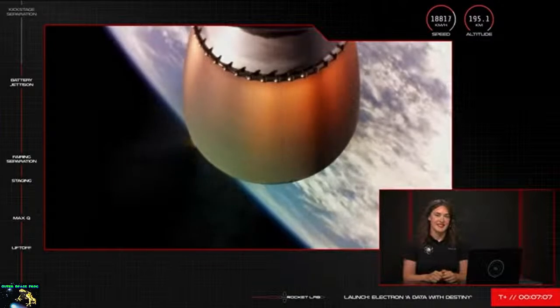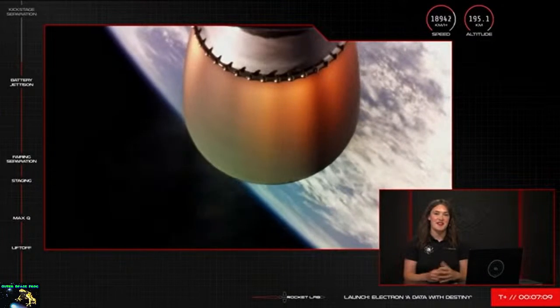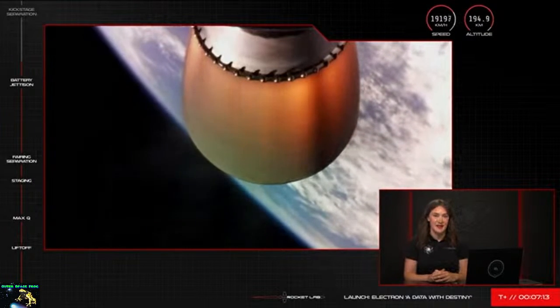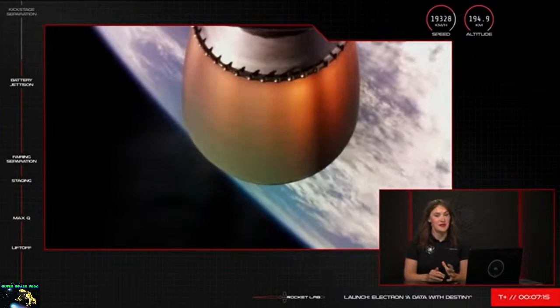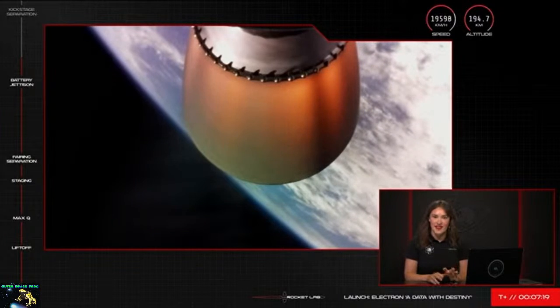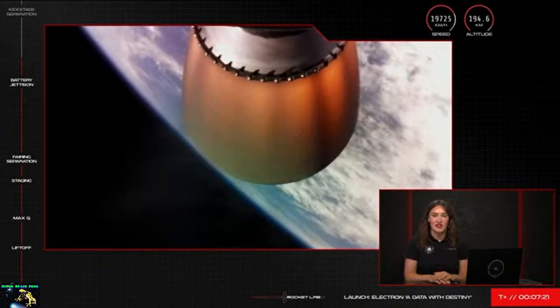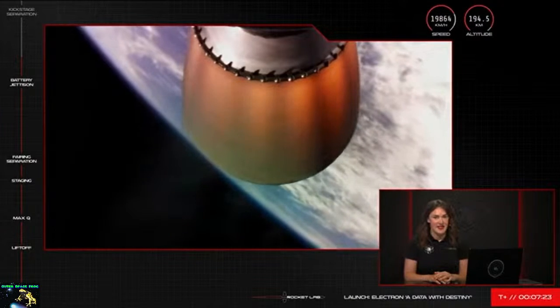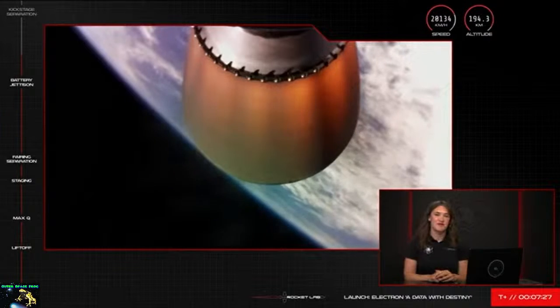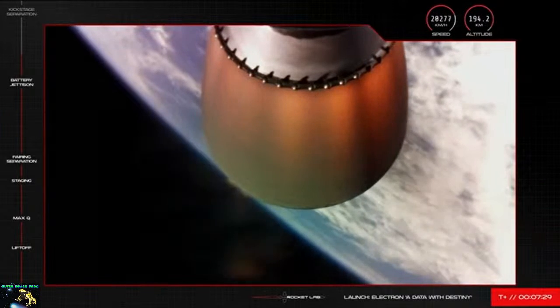You can see the second stage Rutherford engine burning bright on your screen there with Electron well on track to deliver the Black Sky payloads to orbit in around 50 minutes or so. The vehicle is traveling at more than 19,000 kilometers an hour with an altitude of nearly 200 kilometers and everything is continuing as expected with our stage 2 burn voltage battery discharge holding nominal.